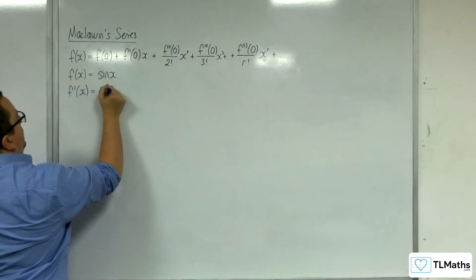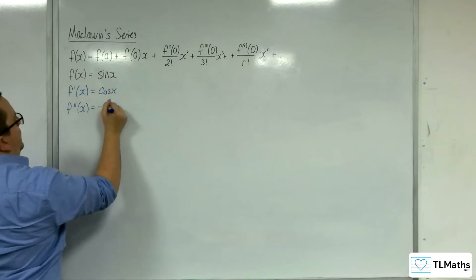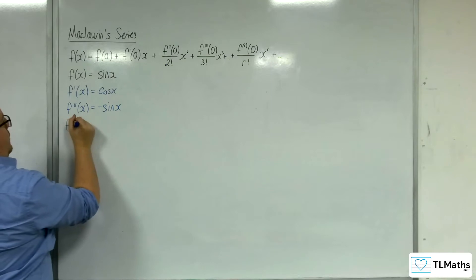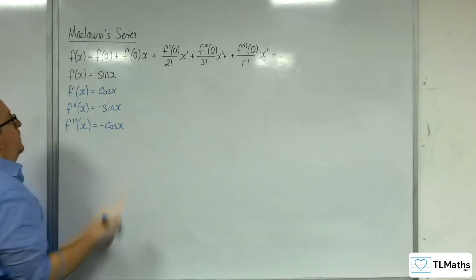So sine x goes to cosine x. Second derivative is minus sine x. And third derivative is minus cosine x.